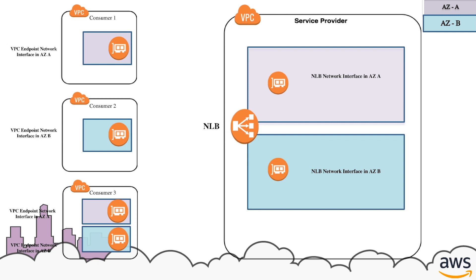When Consumer 1 connects to the service using its endpoint interface in AZ-A, it connects to the NLB's interface in AZ-A. When Consumer 2 connects to the service using its endpoint interface in AZ-B, it connects to the NLB's interface in AZ-B. Depending on the AZ from where the connection is initiated for the endpoint interface for Consumer 3, it can connect to either of the NLB's interfaces. If a connection is initiated from the interface in AZ-A, it connects to the NLB's elastic network interface in AZ-A. And if a connection is initiated from an interface in AZ-B, it will connect to the NLB's elastic network interface in AZ-B.